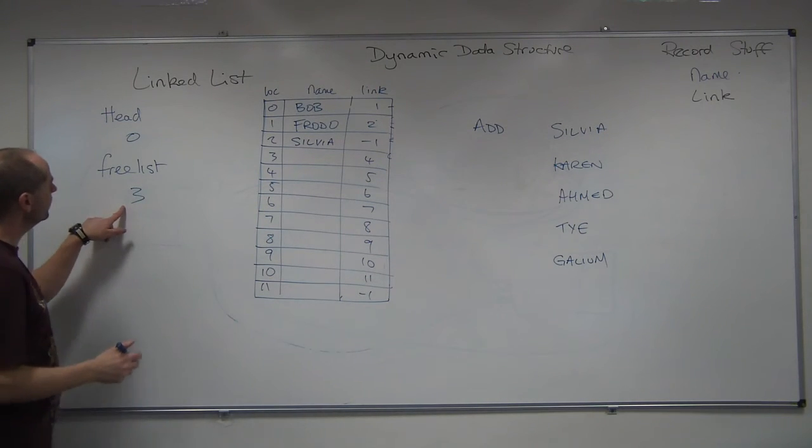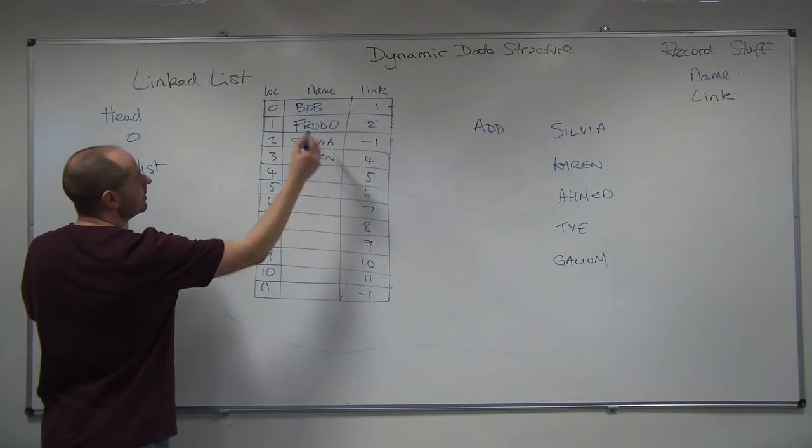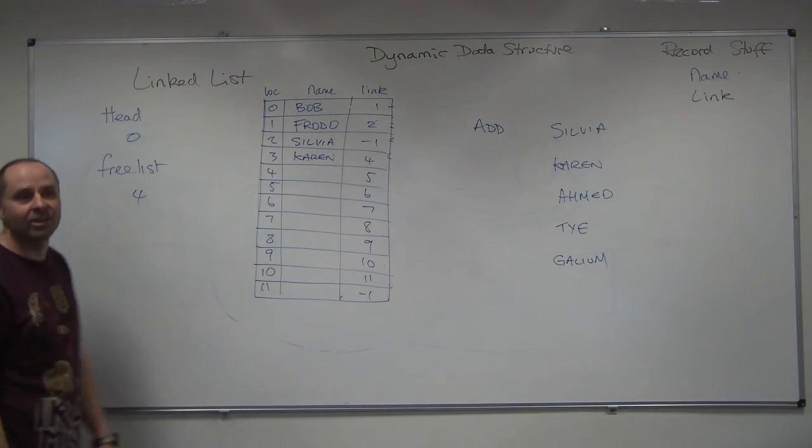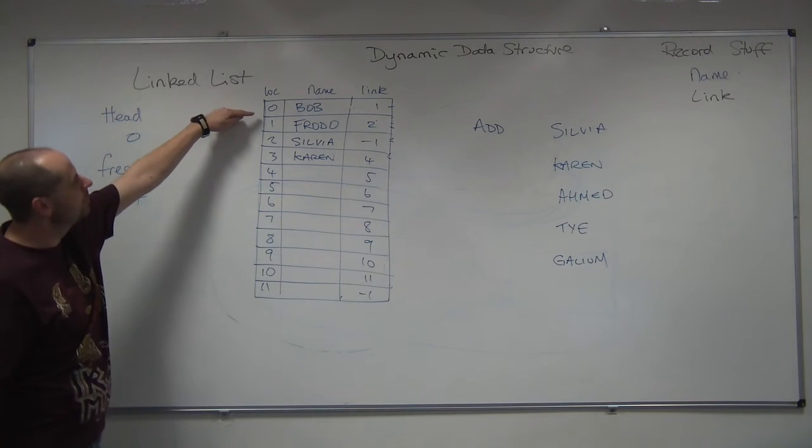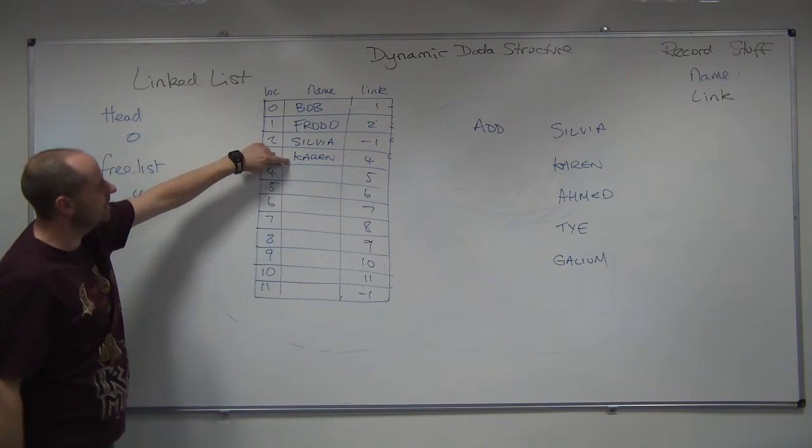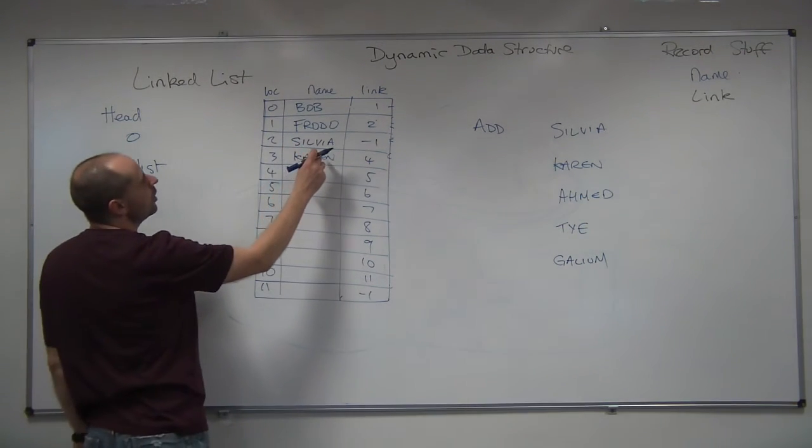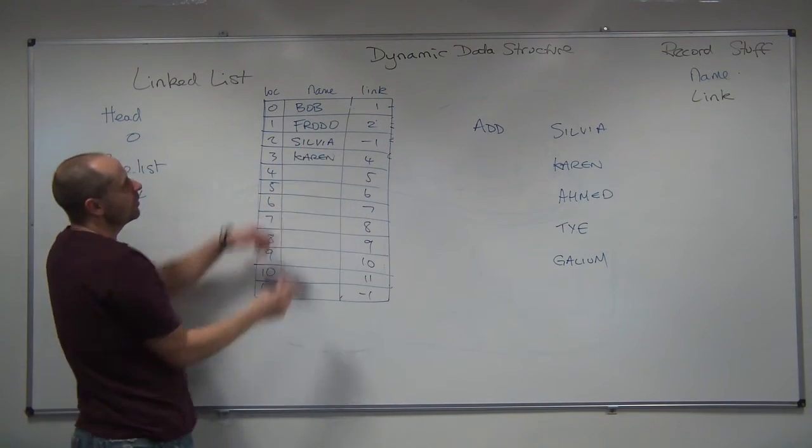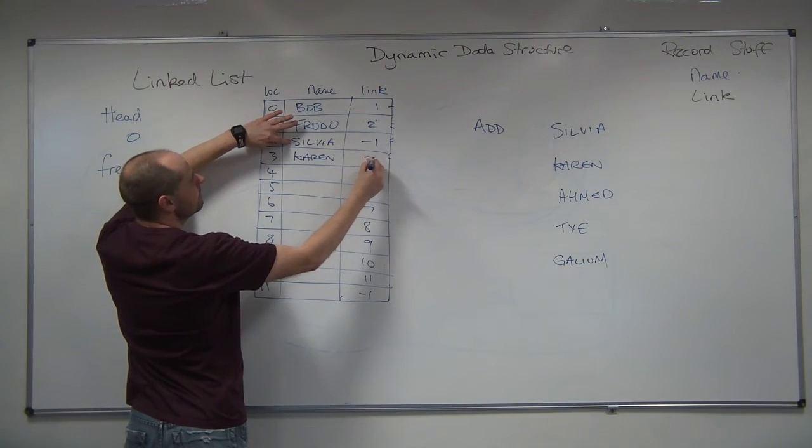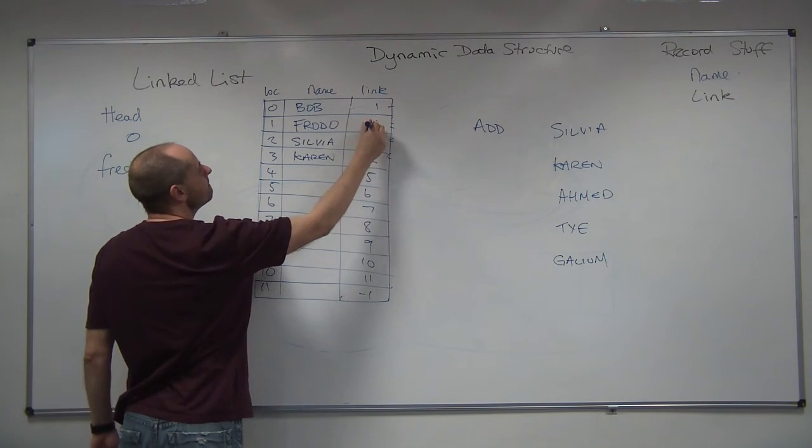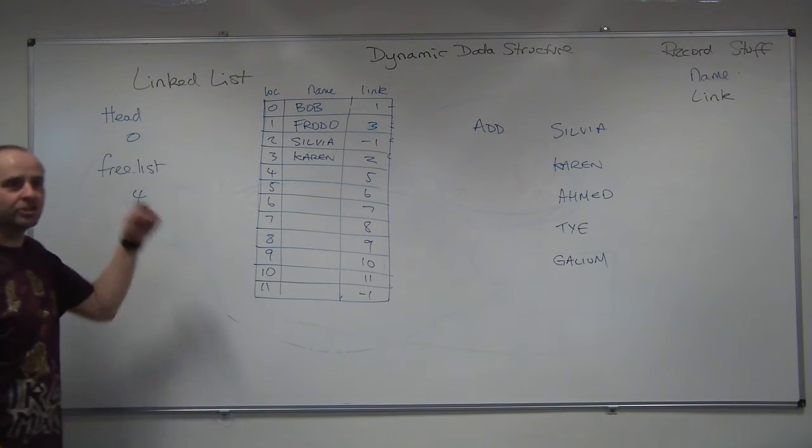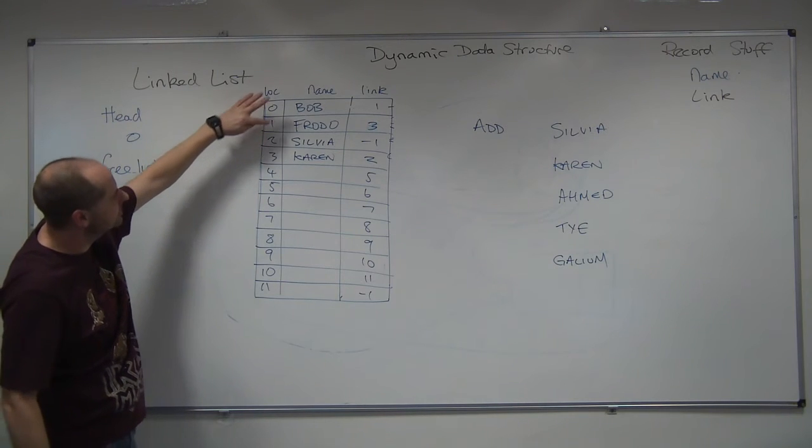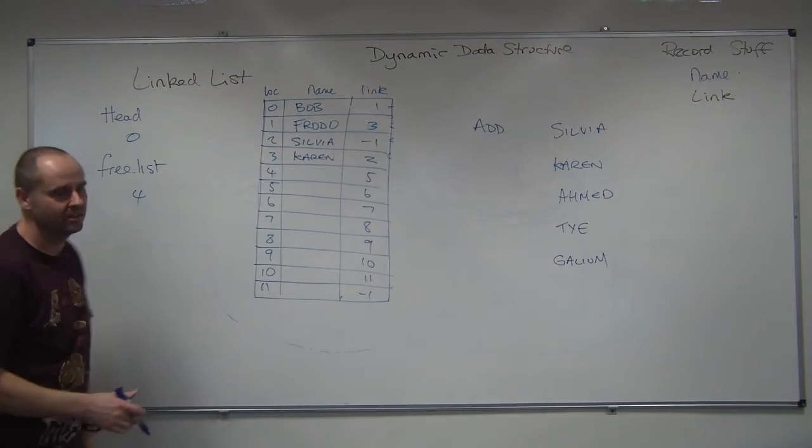Karen, put it in the free space, which is at three. Alter my pointer. Now we need to find out where Karen goes. So start our search. Bob, then to Frodo, then we get to Sylvia. So Karen goes between Frodo and Sylvia. So Frodo needs to point to Karen, and Karen needs to point to Sylvia. So if we do it in the right order, well Frodo currently pointed to Sylvia. So let's change Karen's pointer to that. Then we can make Frodo point to Karen.